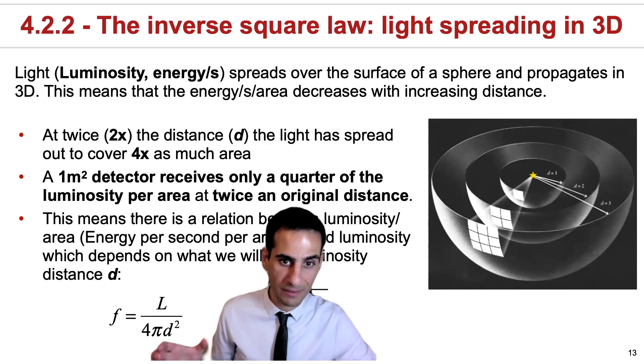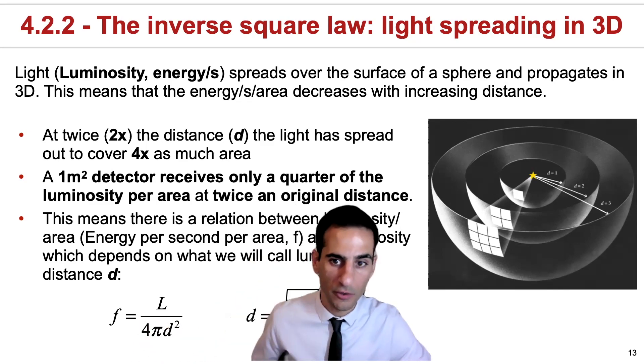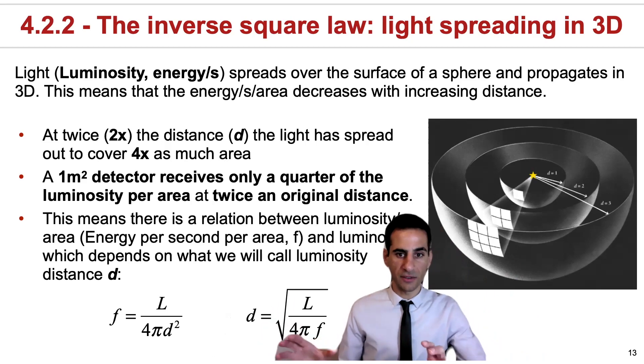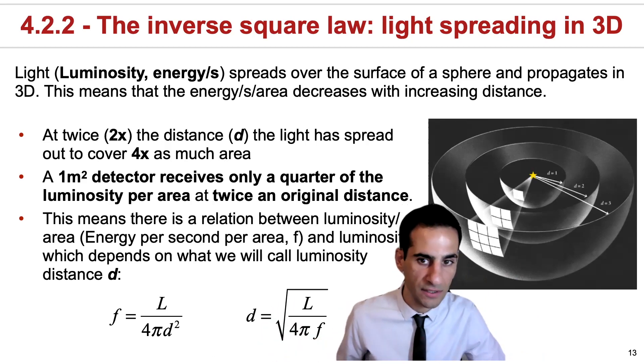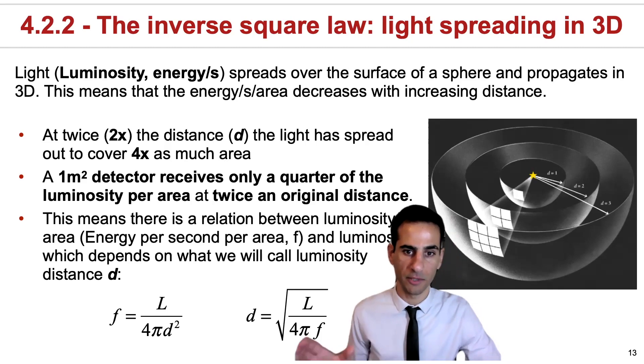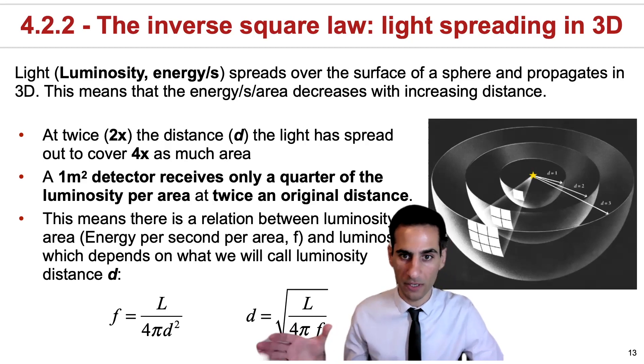So the things that we will be measuring typically, which will be energy per second per area, will be given by this f that we'll come back to. For now, the important thing is to define what we mean when we talk about distances, and specifically about luminosity distance, which can be obtained by the square root of the ratio between the luminosity or intrinsic energy and four pi times something we can measure on a detector at a distance.